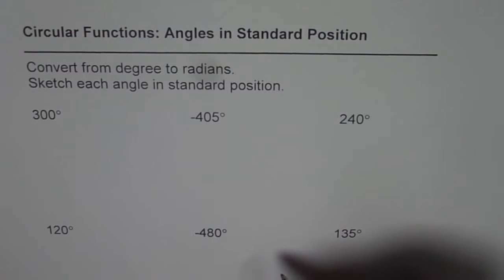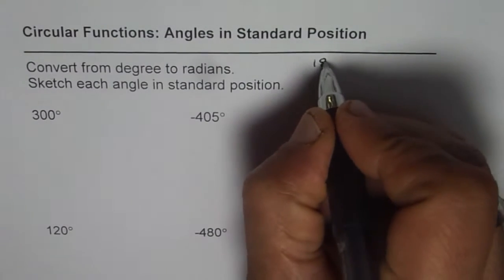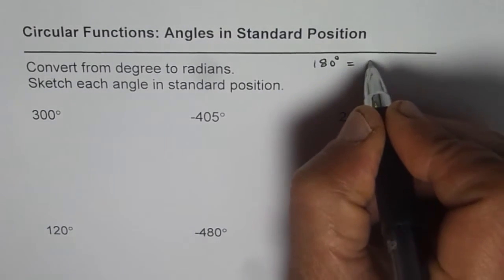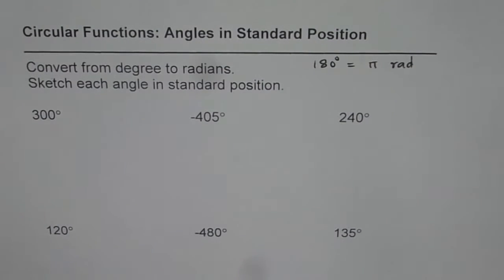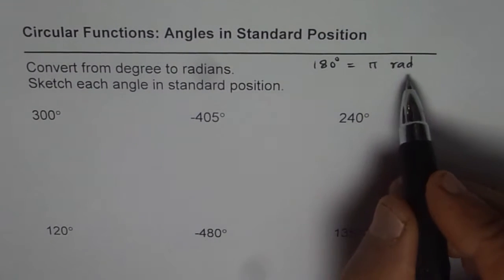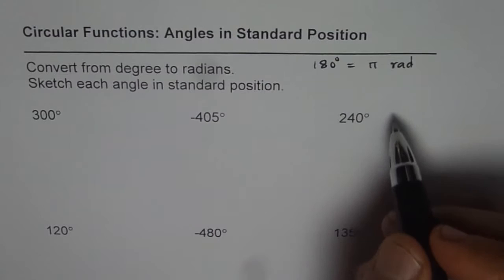The question is convert from degree to radians and sketch each angle in standard position. Now, degrees to radians, what is the conversion factor? We know 180 degrees is equal to pi radians. Radian is a ratio, it really does not have a unit. We write radians, okay, that is for convenience.